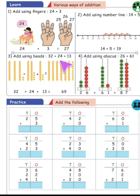Add using beads: 32 plus 24 plus 13. For 32, take 3 pairs of 10 beads and 2 individual beads. Plus for 24, 2 pairs of 10 beads and 4 individual beads. Plus for 13, one set of 10 beads and 3 individual beads.